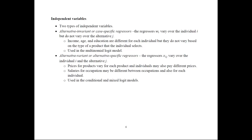We have two types of independent variables. The first is alternative invariant, or case-specific regressors, w_i. These vary over individual i but do not vary over alternative j. Examples are income, age, and education — they differ across individuals but do not depend on the type of product selected. There is only one income value no matter what product you choose. These types of variables are used in the multinomial logit model.